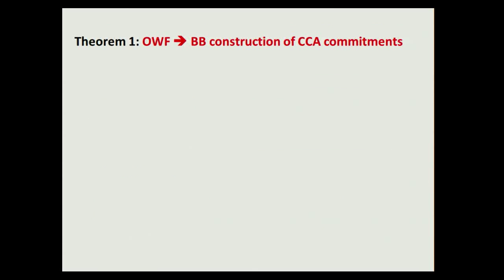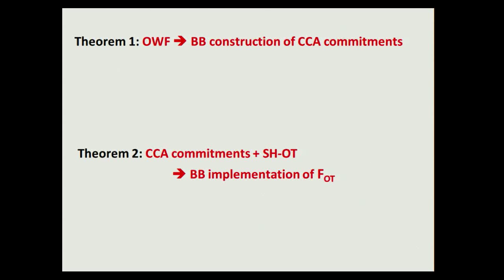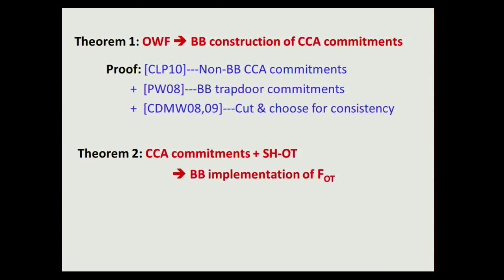With this definition of CC secure commitment in mind, the results in this work can be stated in two theorems. Theorem one says there is a black box construction of CC secure commitment from the minimal assumption of one-way functions. Theorem two says that once you give me such a commitment and a semi-honest OT protocol, we can black-boxly implement the ideal OT functionality in the concurrent setting. To give the black box construction in theorem one, we borrow many techniques from previous works — in particular techniques behind non-black box constructions of CC commitments — we use the black box trapdoor commitment construction from PW08, and the cut-and-choose technique for consistency tracking, originally introduced for building black box non-malleable encryptions.